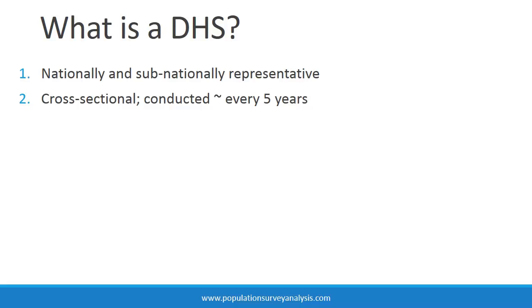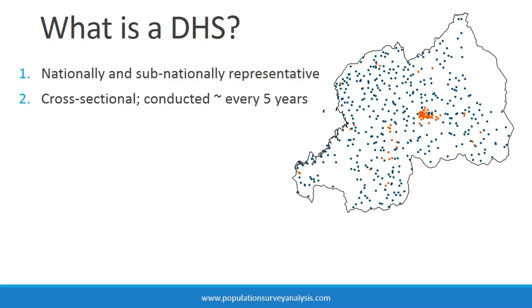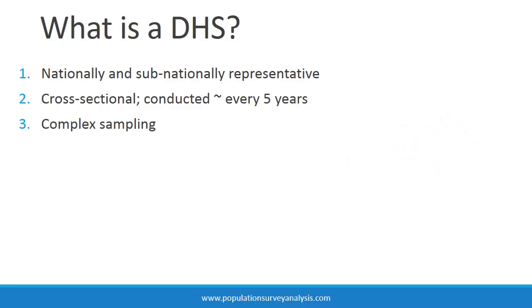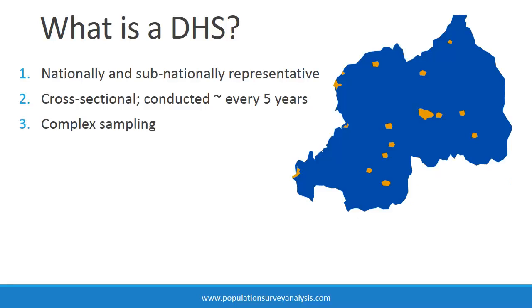DHSs are cross-sectional and repeated approximately every five years in low- and middle-income countries. This means that entirely unique sets of villages and neighborhoods are sampled each time a DHS is conducted. Complex sampling methods are used. Urban areas, for example, often comprise a small portion of the overall population in low-income countries, but are oversampled in a DHS to ensure that there is sufficient sample size to make urban population estimates.